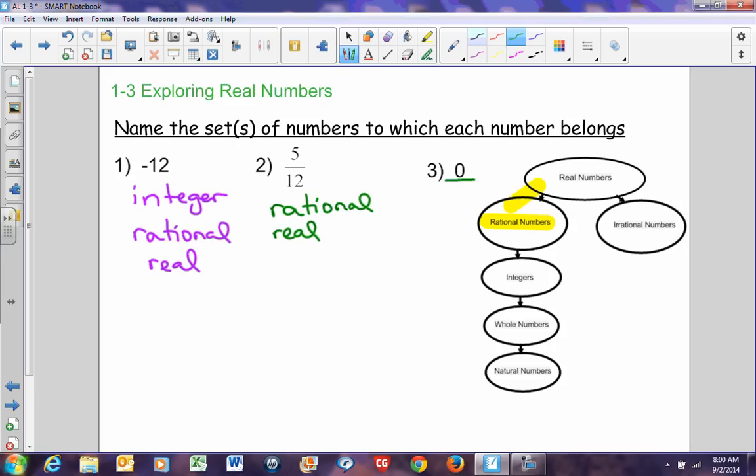So, I'm going to go up the chart from whole number all the way back up to real number. So this is a whole number, it's an integer, it's a rational number, and it's a real number.